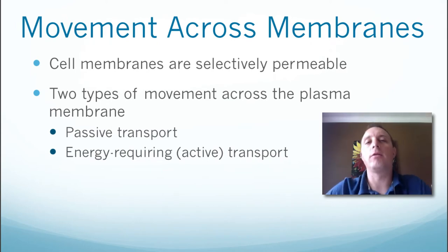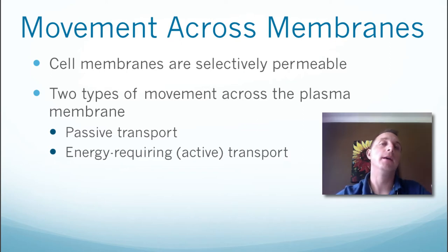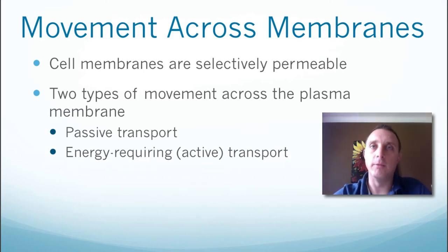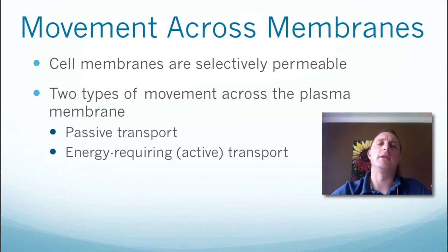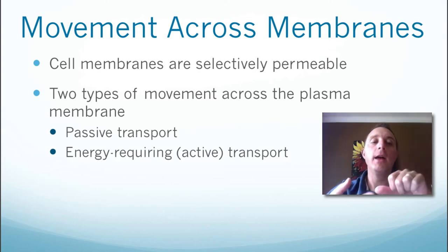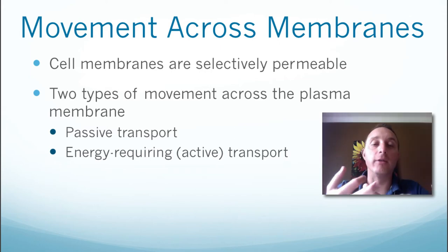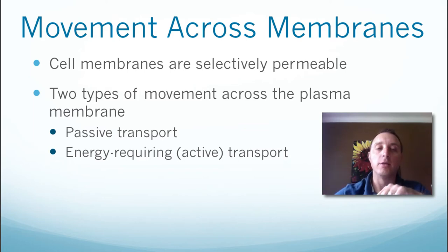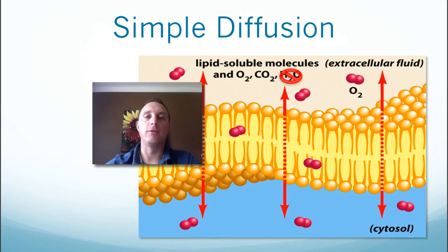So how do things get across a membrane? First, remember that the membrane is selectively permeable — some things can get through quite easily, some not so much, and some can't get through at all. When we talk about movement across a membrane, there are two major categories: passive transport, which does not require any energy input from the cell, and active transport, which does require energy input.